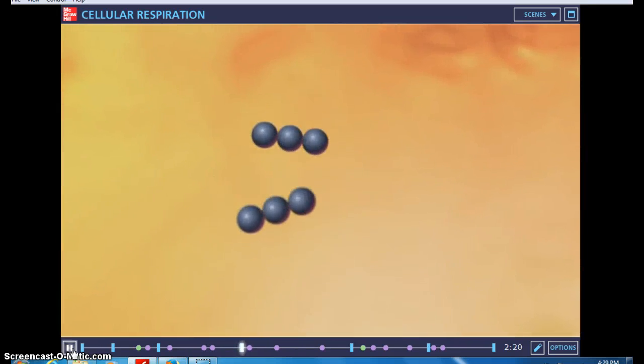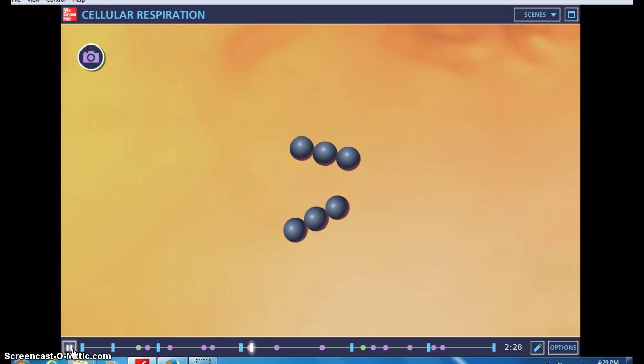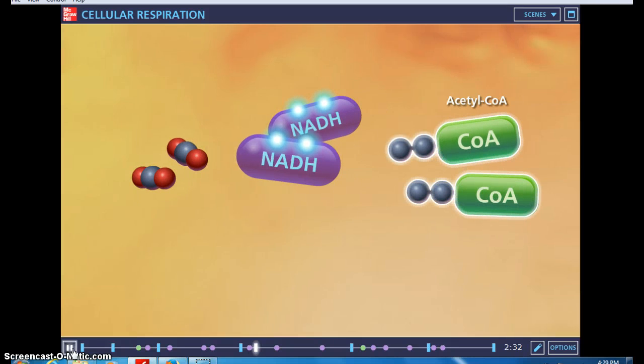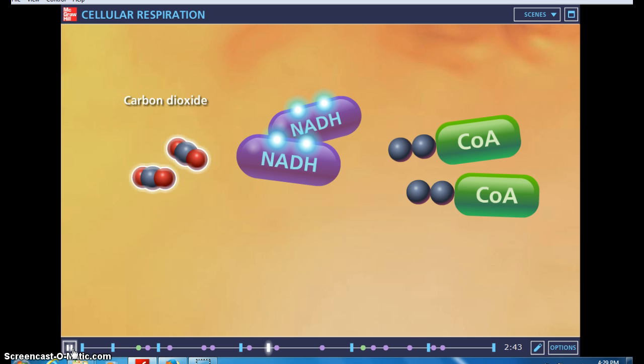The next stage of cellular respiration involves the movement of pyruvate into the mitochondria, where it undergoes oxidation. Each pyruvate molecule is converted into a compound called acetyl-CoA. In the process of pyruvate oxidation, electrons are transferred to NAD+, producing NADH, and a carbon is lost, forming carbon dioxide.